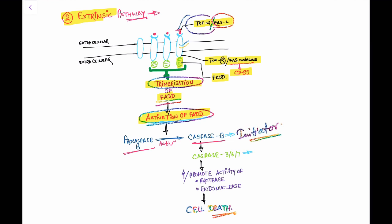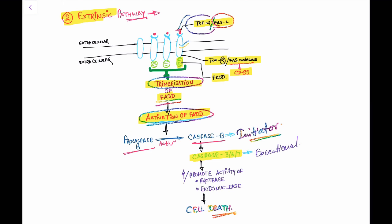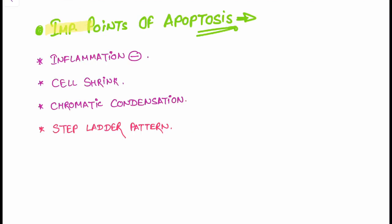Activation of FAS-associated death domains leads to activation of pro-caspase 8 into caspase 8, which is an initiator caspase in the extrinsic pathway. This then leads to activation of caspase 3, 6, and 7, which are executioner caspases — the same as in the intrinsic pathway — ultimately promoting protease and endonuclease activity, destroying proteins and nucleic acids, and leading to cell death.